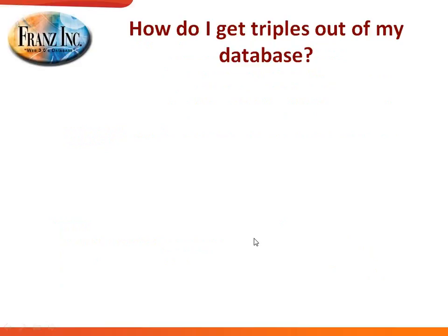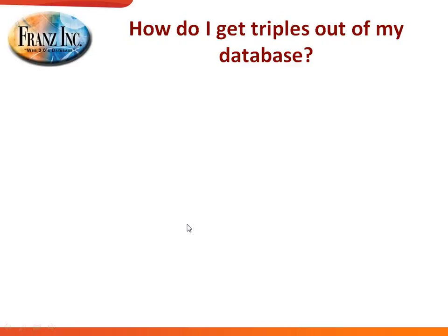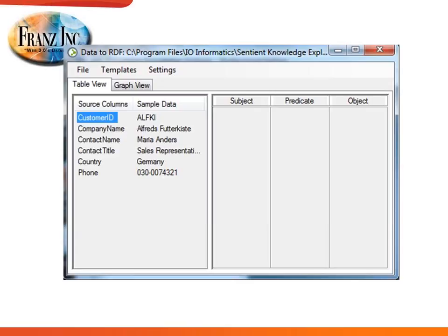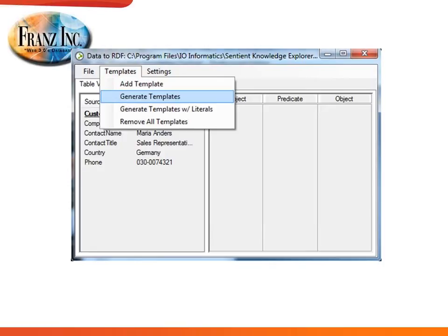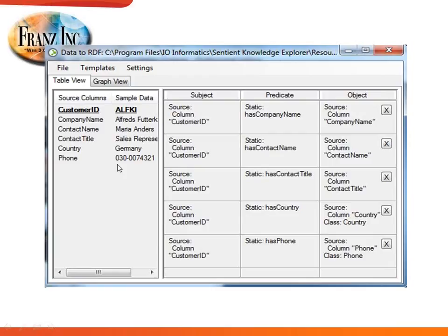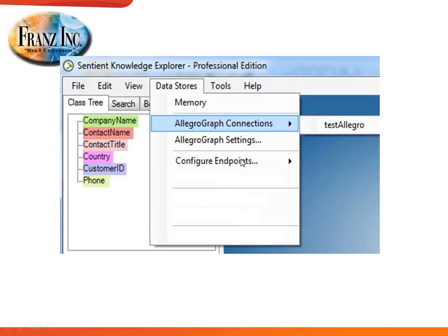Finally, how do you get your triples out of your relational database? We work with partners Mule and Talend for orchestration and use R2RML mapping. We also use other mapping technologies that are friendlier — for example, a visual tool where you can look at columns in your CSV or relational database, ask the system to generate templates showing how a column gets turned into triples, edit every part of the mapping, and ultimately send the data straight to AllegroGraph.